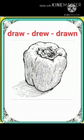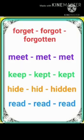Next is 'draw, drew, drawn.' Draw means when you make something with a pencil or pen — for example, she has drawn a capsicum. Next is 'forget, forgot, forgotten' — when you don't remember something or when something skips from your mind. Next is 'meet, met, met' — means to meet somebody. Then 'keep, kept, kept' — like 'I have kept my books in the bag.' Next is 'hide, hid, hidden' — means to hide, like a cat is hiding under the table.